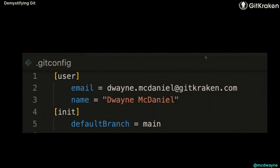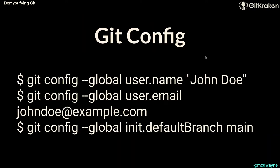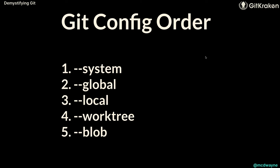Git config lives in a .config folder in your home directory by default, but that's not the only place Git pulls config from. Git looks at system level first, then global (your home folder), then locally in the .git/config file — and each level overwrites the one above it. You can even define config per worktree and per blob. Use 'git config --list --show-origin' to see where every line of config comes from and which file it lives in.